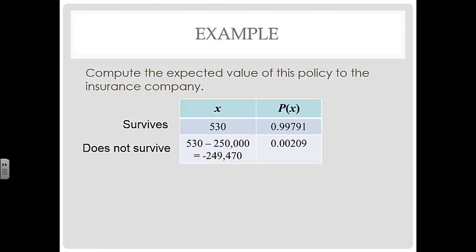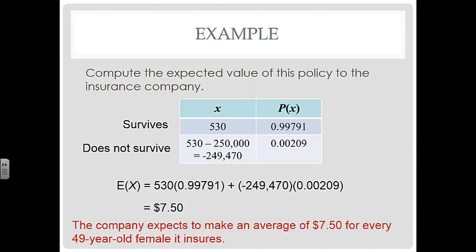Our expected value is the sum of the product of each X and its P of X. So we're just going to multiply our numbers and we get $7.50. The company expects to make an average of $7.50 for every 49-year-old female it insures. Now, because this is a long-term result, the insurance idea will not work if only a few people are insured. It's based on large numbers.